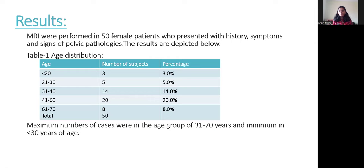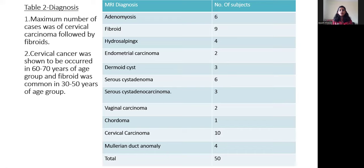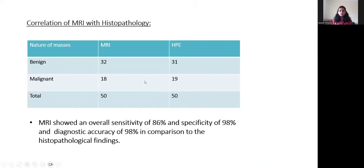Results: MRI was performed in 50 female patients presenting with history, symptoms, and signs of pelvic pathologies. Age distribution showed maximum cases in the 31 to 70 years age group and minimum in those under 30 years. The maximum number of diagnoses was cervical carcinoma followed by fibroids; cervical cancers were predominant in the 60 to 70 years age group and fibroids in the 30 to 50 years age group. MRI showed an overall sensitivity of 86%, specificity of 98%, and diagnostic accuracy of 98% compared to histopathological correlation.